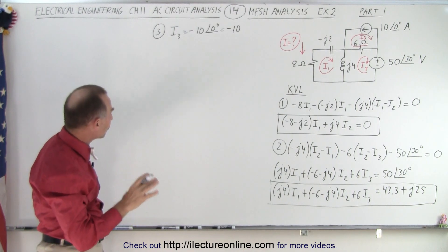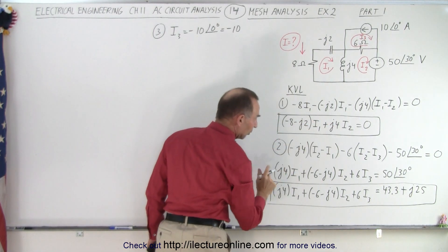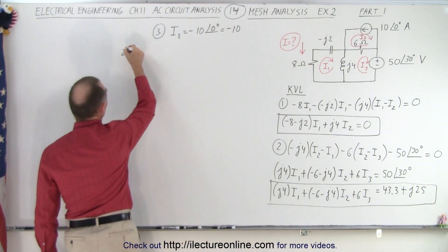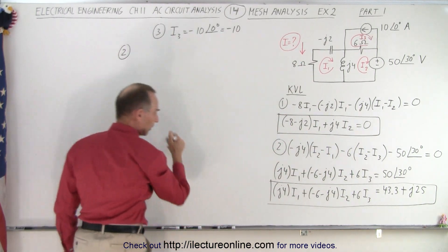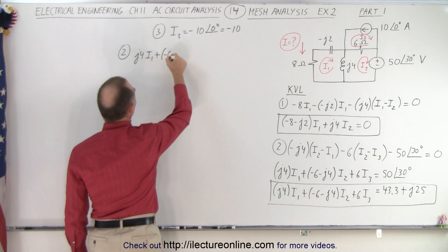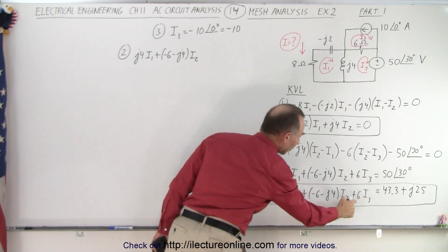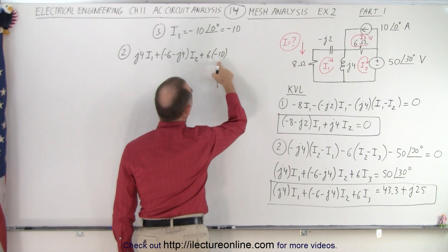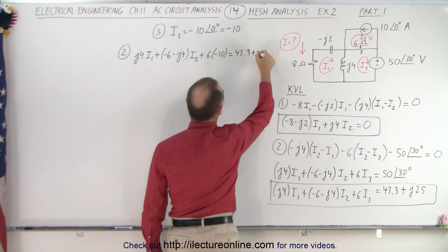Now notice we have three currents, we have an I3 and I1 and I2. We can get rid of the I3 in here by substituting what we have in here. So let's do that. Let's take equation number two and substitute for the I3 what we know I3 to be equal to. All right, when we do that we get the following: we get J4 I1 plus a minus 6 minus J4 I2, and then plus 6 times a minus 10 instead of 6 I3, equals 43.3 plus J25.